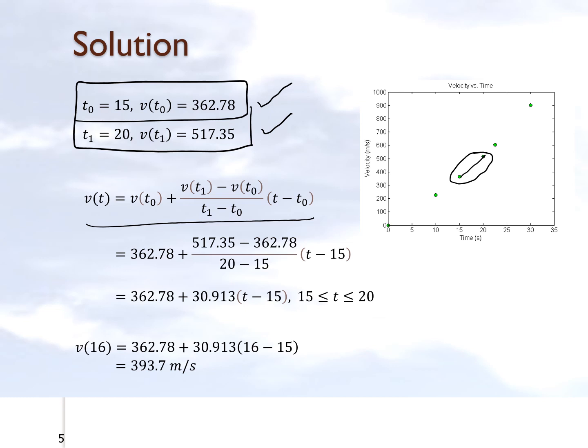The velocity at t naught is 362.78 and the velocity at t1 is 517.35. We know that t1 is 20 and t naught is 15. That allows us to do the proper substitutions here and gives us the expression for the linear spline part from 15 to 20.